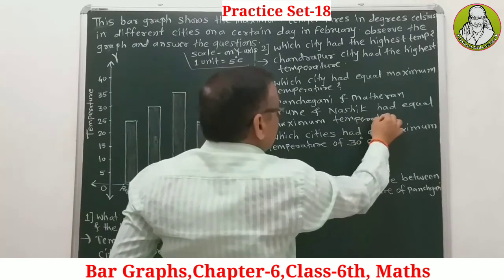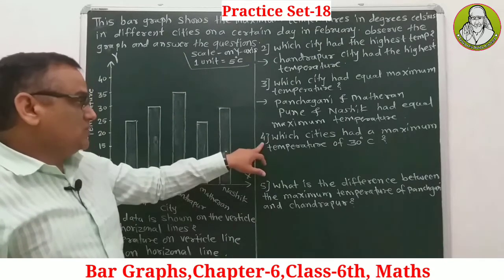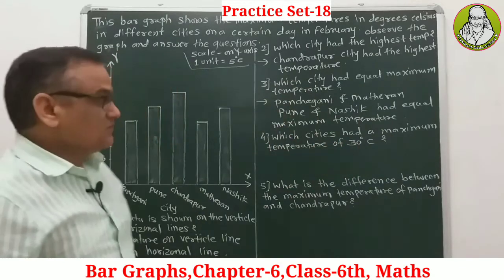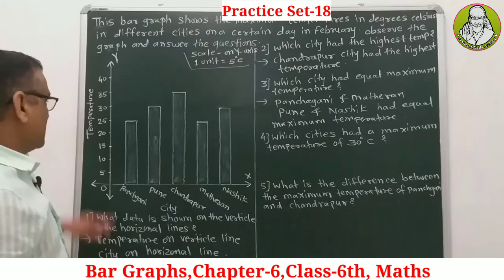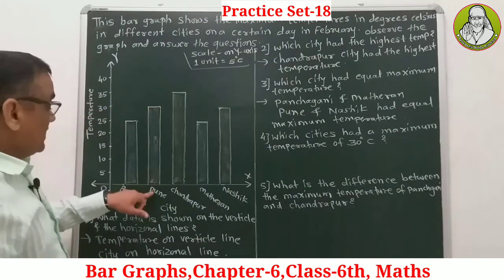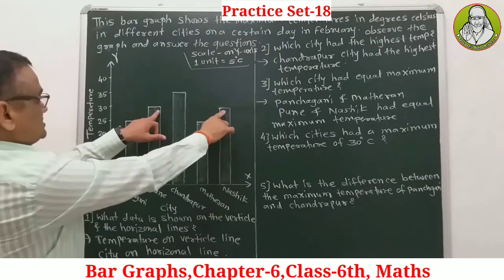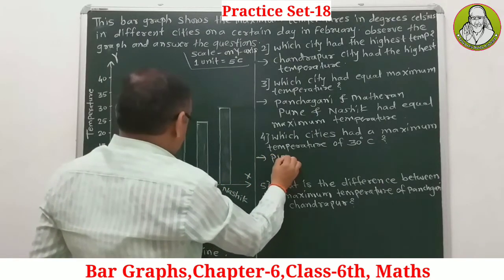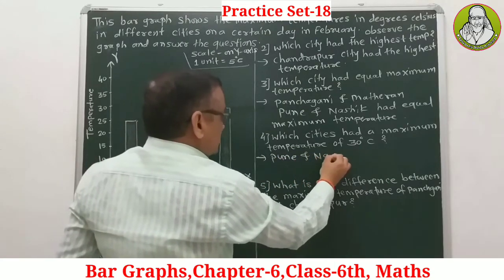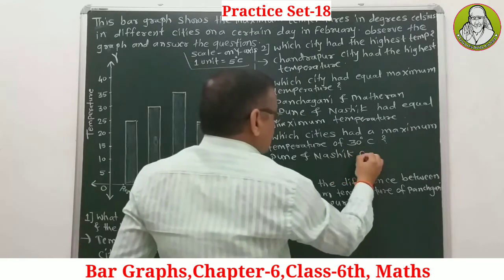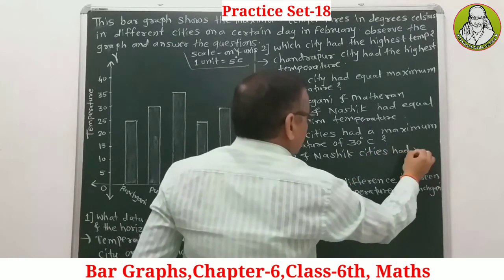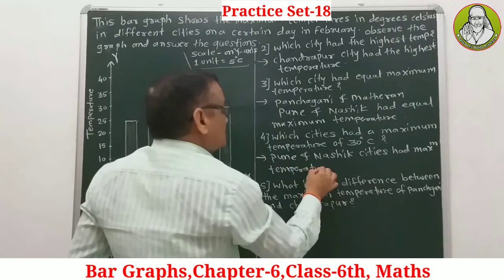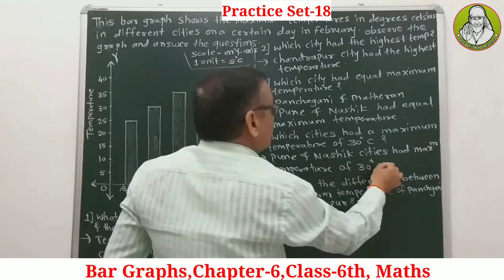Question 4: Which cities had a maximum temperature of 30 degrees centigrade? Pune and Nasik city had the maximum temperature of 30 degrees centigrade.